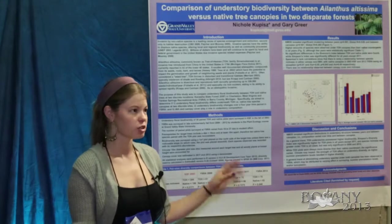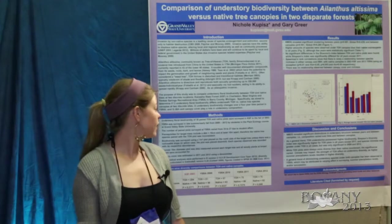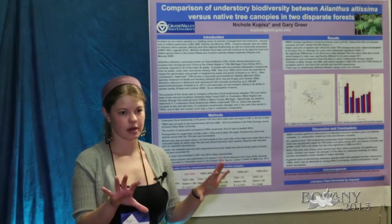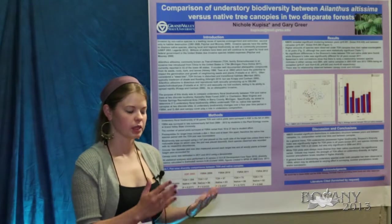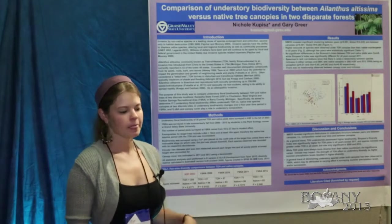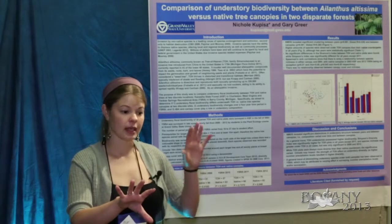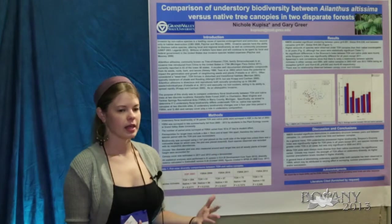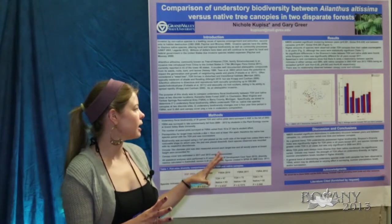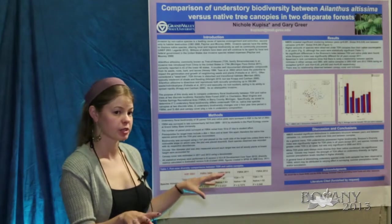The only consistent pattern was that there were more species under Ailanthus than under native trees, but that was only significant in two of the five years — 2009 and 2012. We then ran an NMDS to see if there were significant groupings. Through the NMDS we found significant clusters and significant differences between Ailanthus and native understories. Looking at all Michigan years combined — 2009 through 2012 — not only were Ailanthus versus native plots different in species composition, but the years themselves were different too.